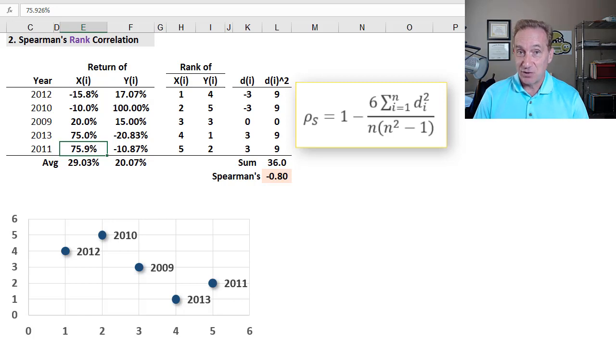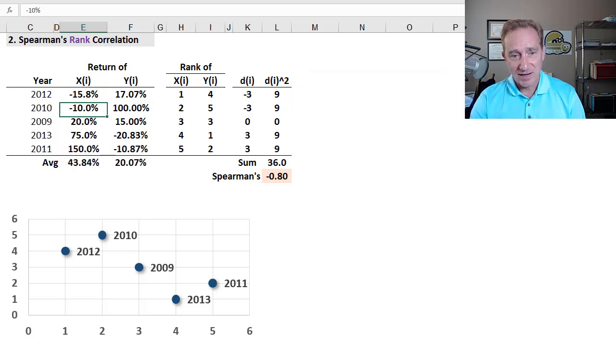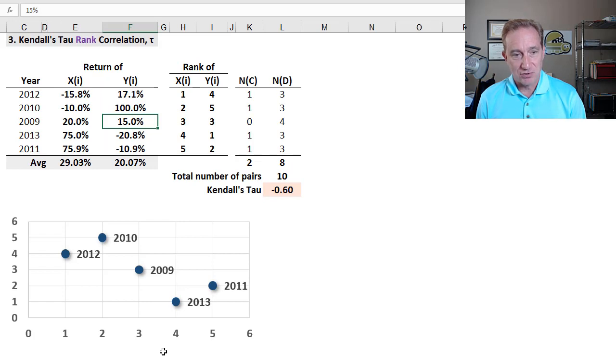And then, one difference, an advantage or disadvantage, depending on what we're doing with it, or a use case, recall with the Pearson's, when I doubled the outliers, I got a difference, but here, these are ranked, and so, it does not change here, the ranks. This Spearman's rank is robust to changes in outliers. So, that's Spearman's rank, first of the two ordinal rank correlation measures.